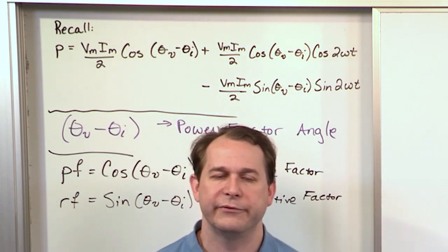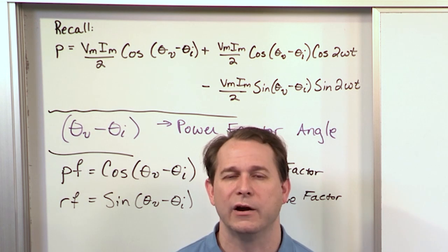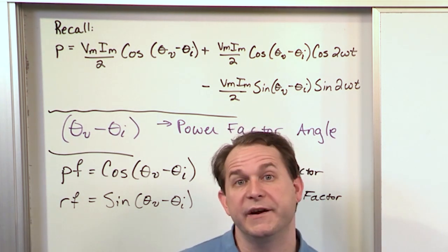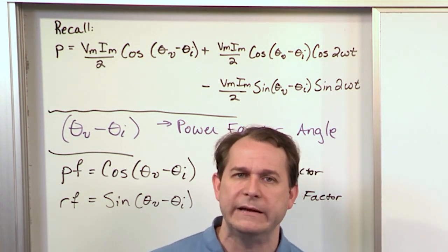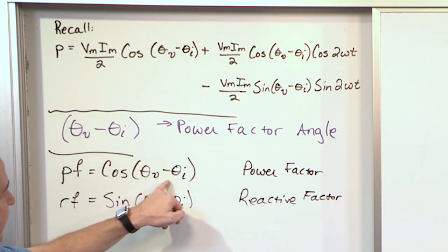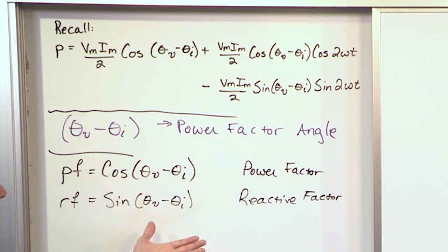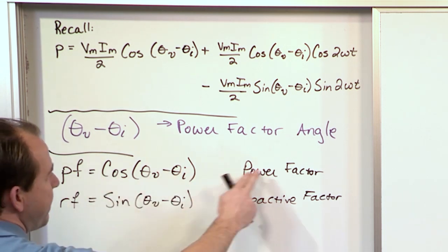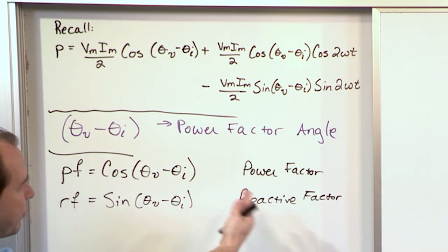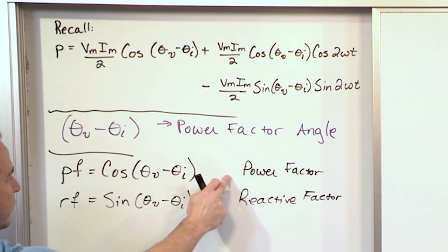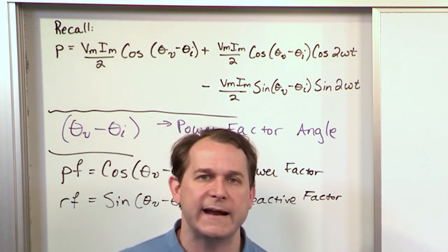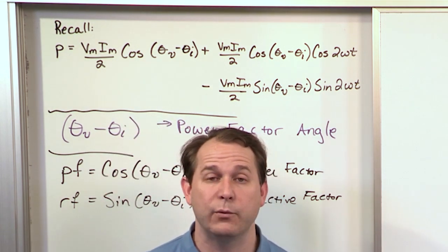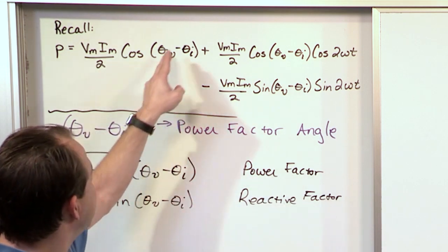A lot of times in problems you'll have a circuit with some load, and it'll say the power factor is 0.6, and you'll need to use that to solve the problem. If the power factor is 0.6, that's the cosine of the angle. You can take the inverse cosine to find theta V minus theta I, and once you find that angle, you're golden — you can find the instantaneous power and do everything.